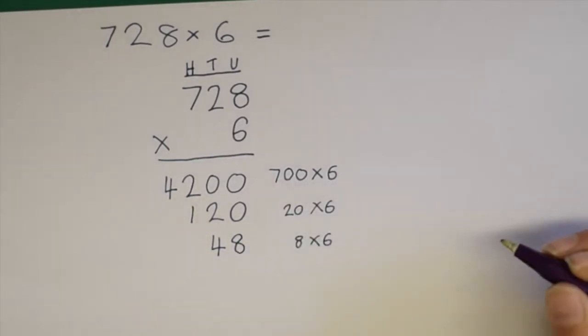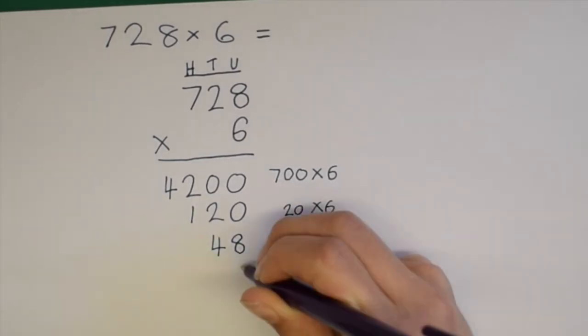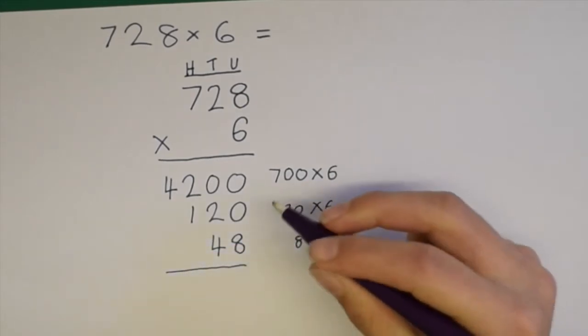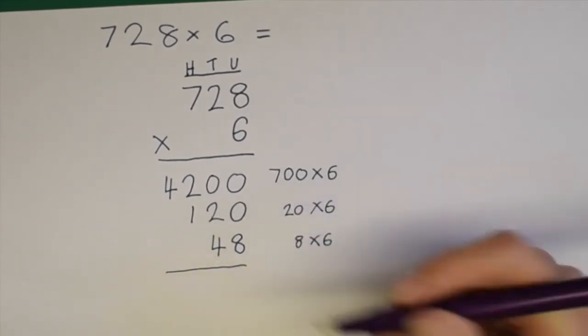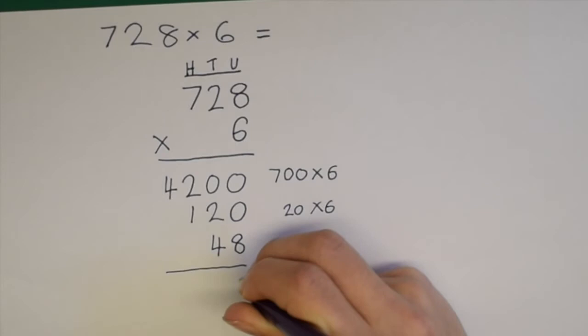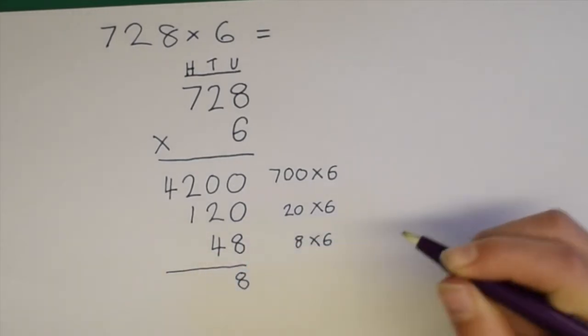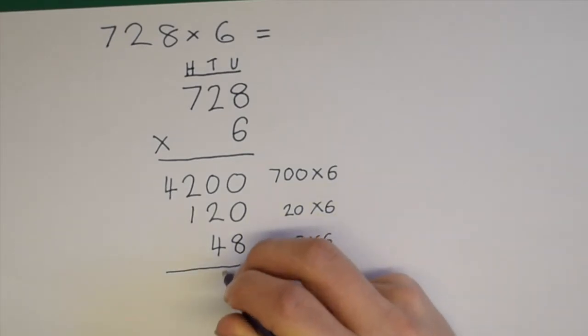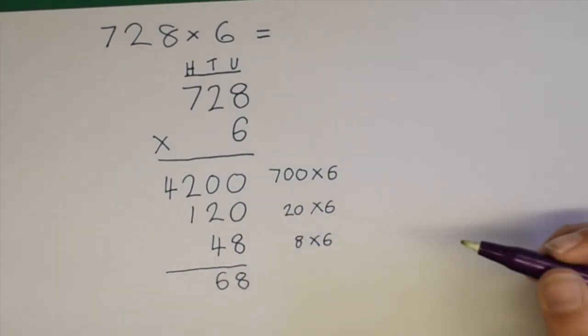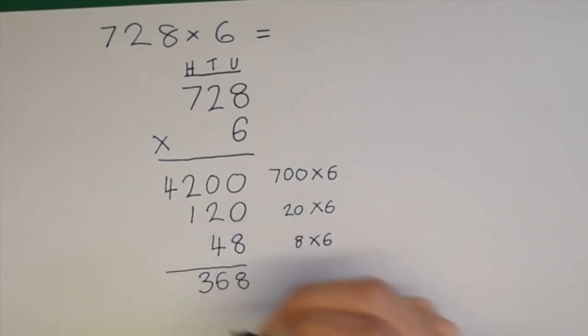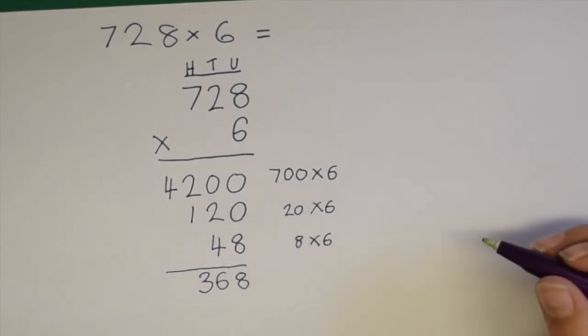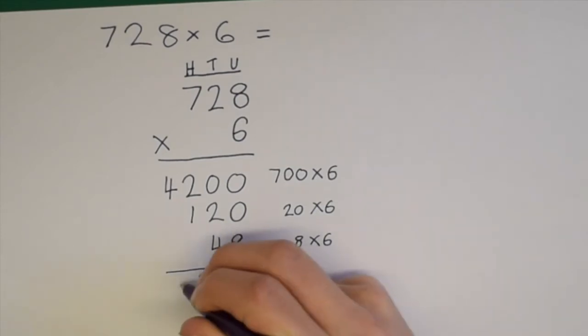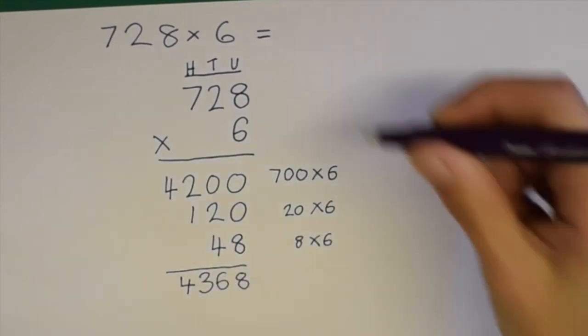Now we can add these answers up. 0 add 0 add 8 equals 8. 0 add 2 add 4 equals 6. 2 add 1 add nothing equals 3. And 4 add nothing equals 4. And we can write our answer at the top.